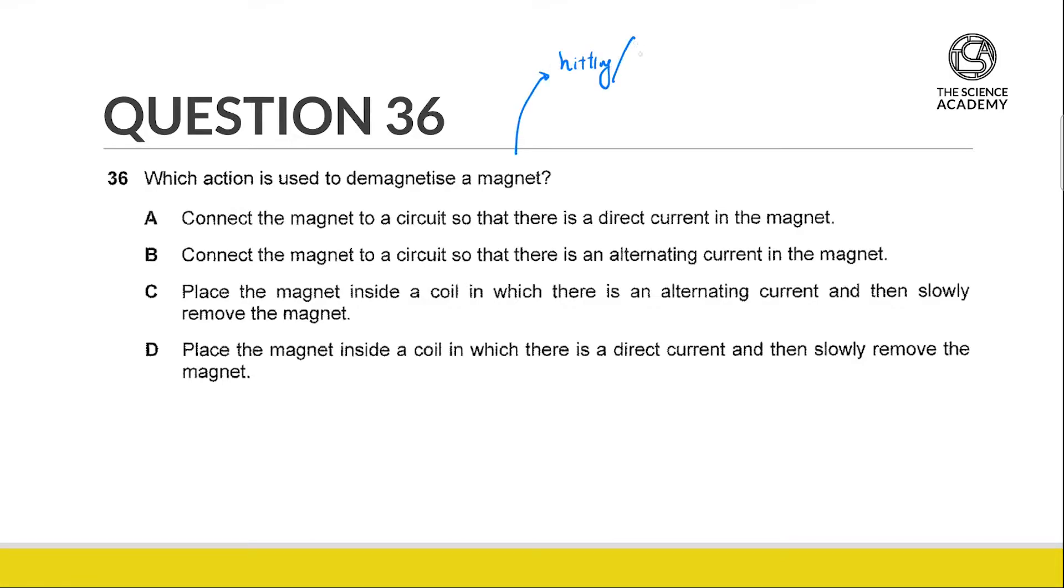The other electrical method is we connect it to an AC - connect a coil or solenoid to an AC source - and we slowly pull it through.